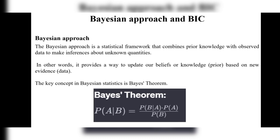In other words, it provides a way to update our beliefs or knowledge based on new evidence. Here, your knowledge is prior and the new evidence is data. The key concept in Bayesian statistics is Bayes' theorem. The Bayes' theorem formula is: P(A|B) = P(B|A) × P(A) / P(B).